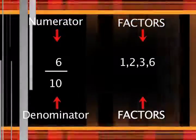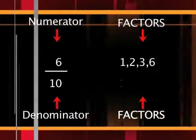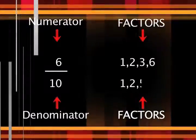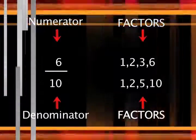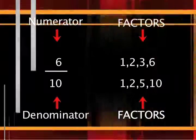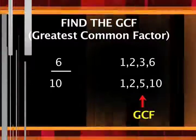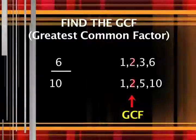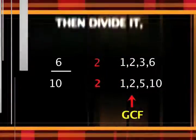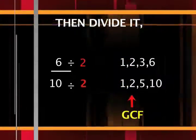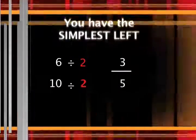Alright now let's review. List the factors of the numerator. List the factors of the denominator. Find the G-C-F. Then divide it and you have the simplest form.